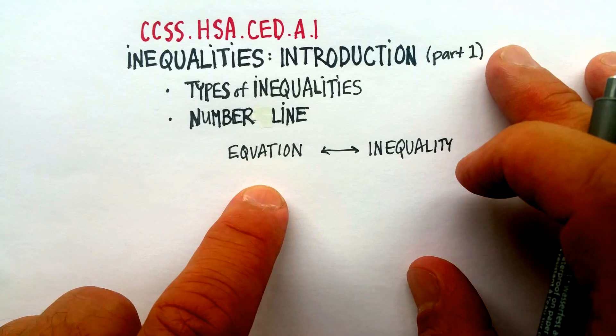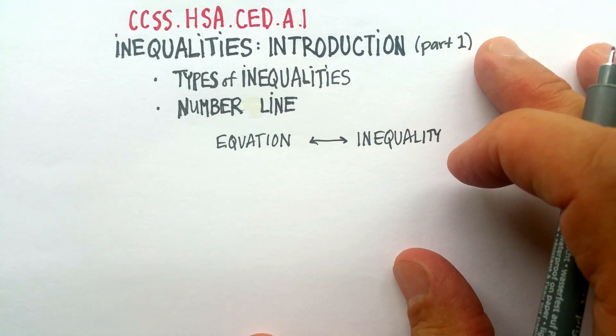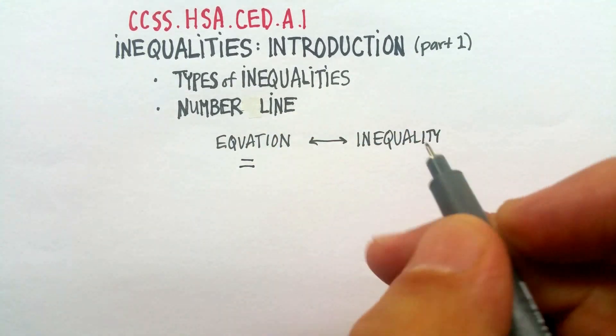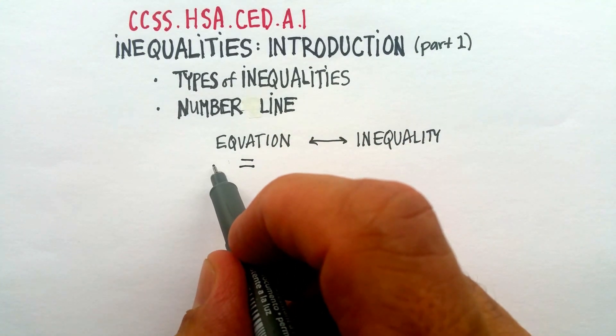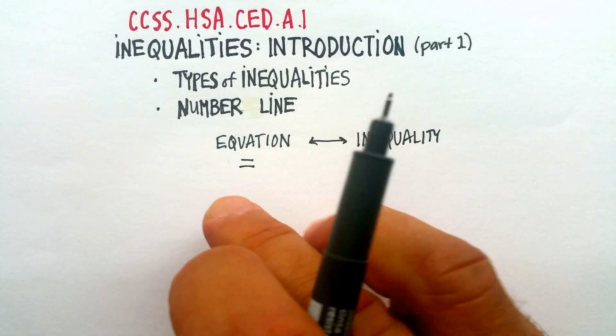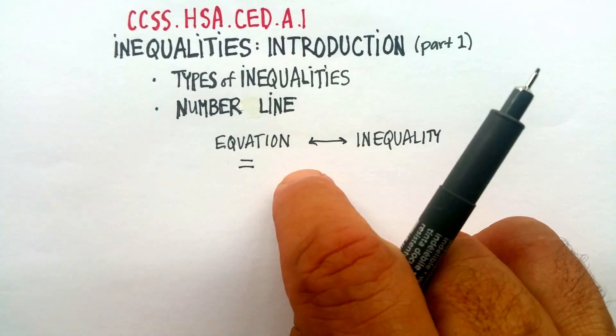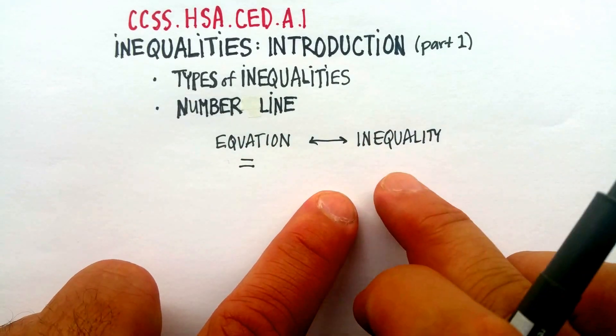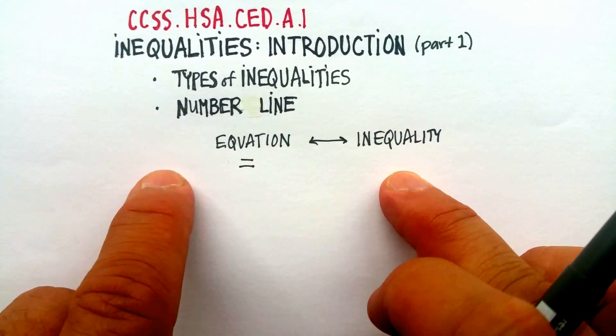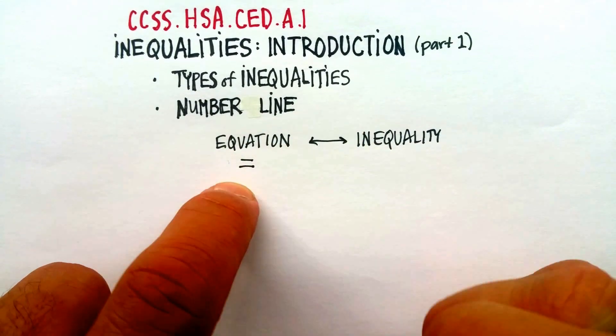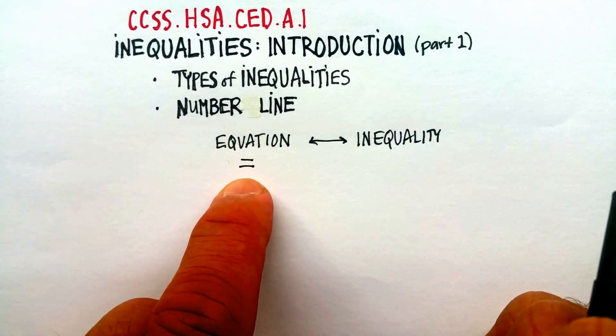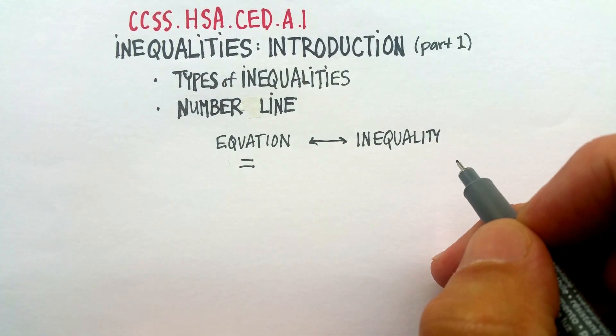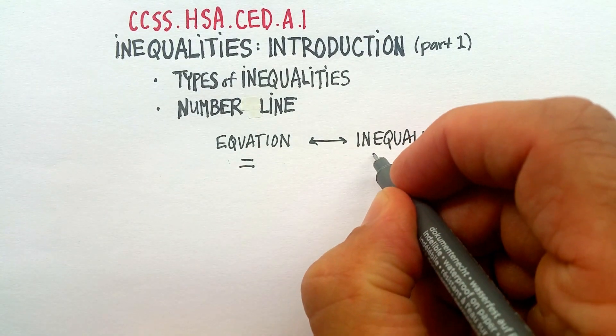So how do you write down the two? Equations have to have equal signs, right? Because on one side of the equal sign and the other side of the equal sign they would be exactly the same quantity, volume, whatever it might be. But with an inequality it's exactly imbalanced, so we can't use these equal signs. There are actually five types of inequality signs.